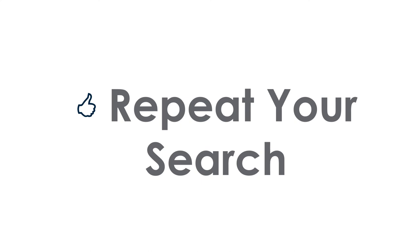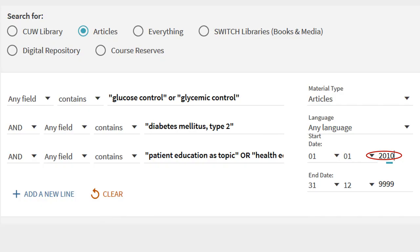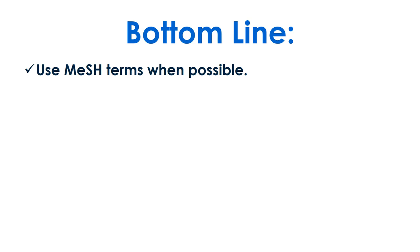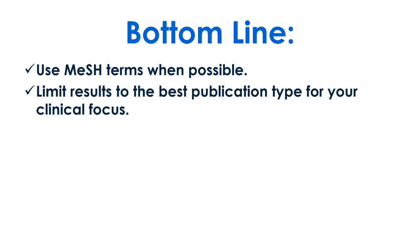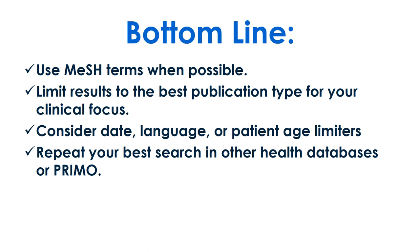To find all sources available, be sure to repeat your search in multiple databases and Primo. In the advanced search in Primo, copy your search from the other databases. Be sure to use the peer-reviewed journal articles filter. Use MeSH terms when possible. Limit results to the best publication type for your clinical focus. Consider additional filters like date, language, or patient age. Repeat your best searches in other health databases or Primo.